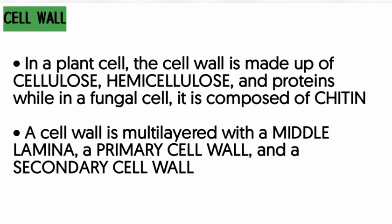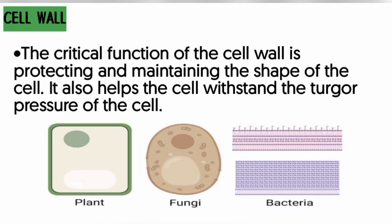In the primary cell wall, we have cellulose, and in the secondary cell wall we have cellulose and hemicellulose. The middle lamella is like a bridge between the primary and secondary cell walls. Together, these three parts of the cell wall serve specific functions: they give shape to the cell, they protect the cell, they help the cell withstand turgor pressure, and they allow permeability — passage of materials from within the cell to the outer part and vice versa.